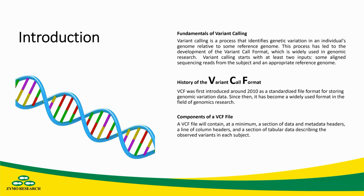The VCF will have at least three different components: a section of data and metadata headers denoted by double pound signs, a column header line denoted by a single pound sign, and a tabular section describing the observed variants in each subject.